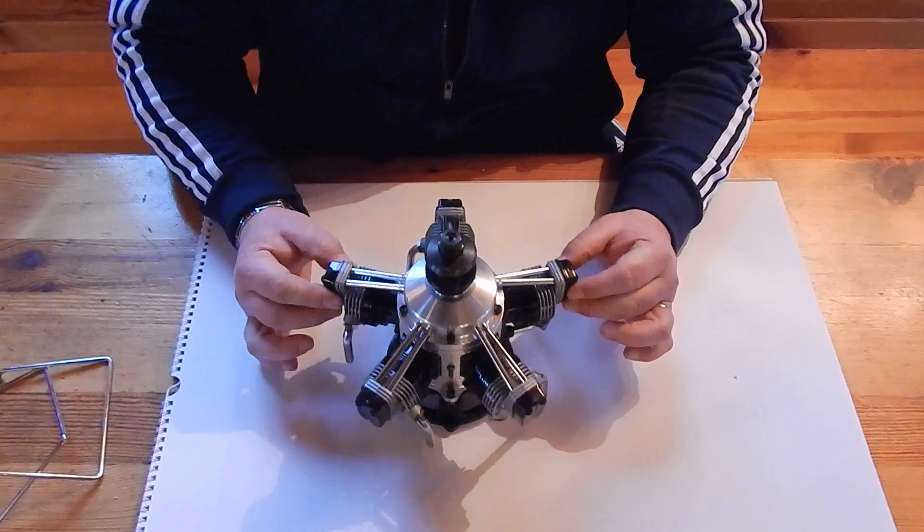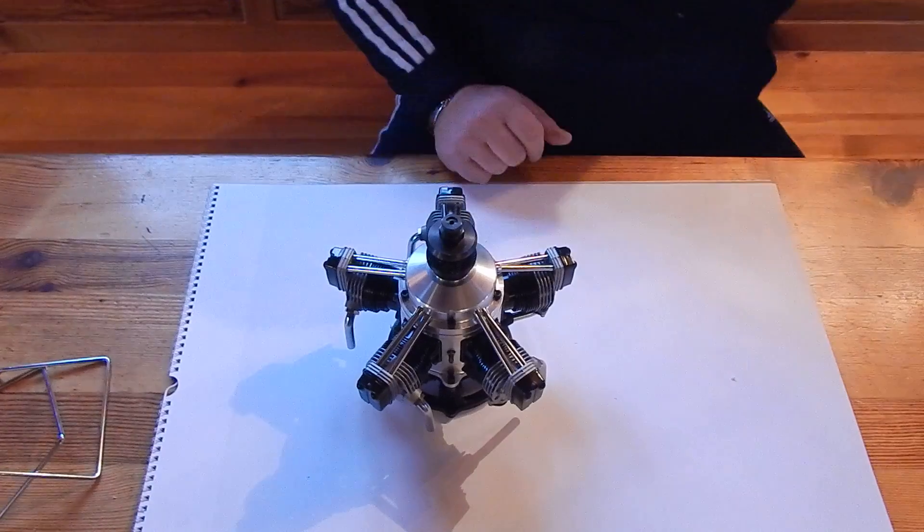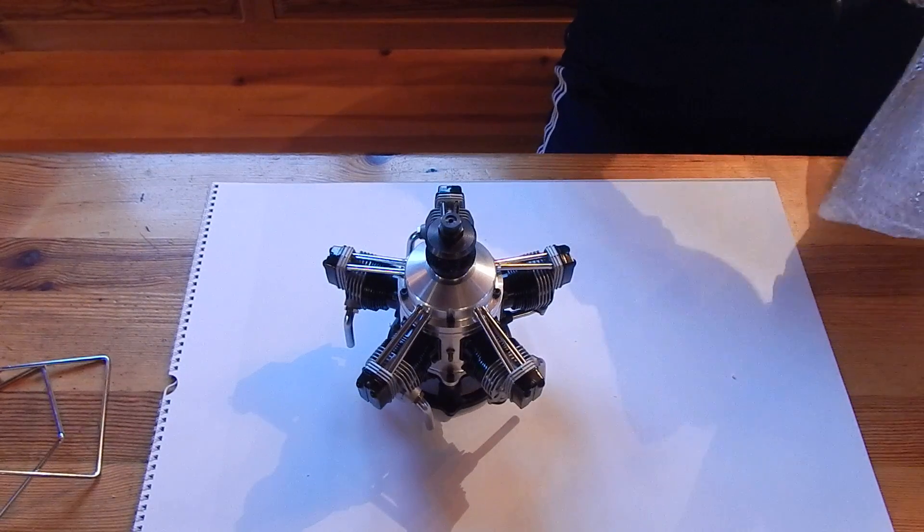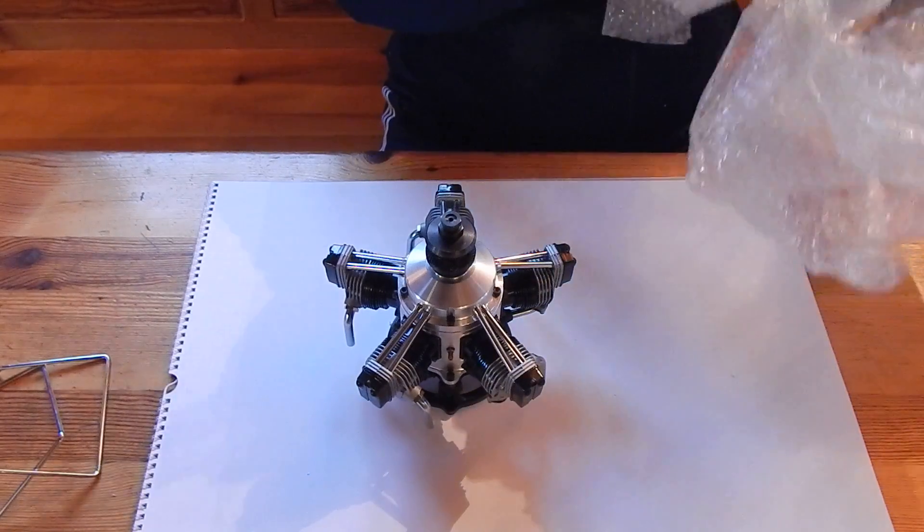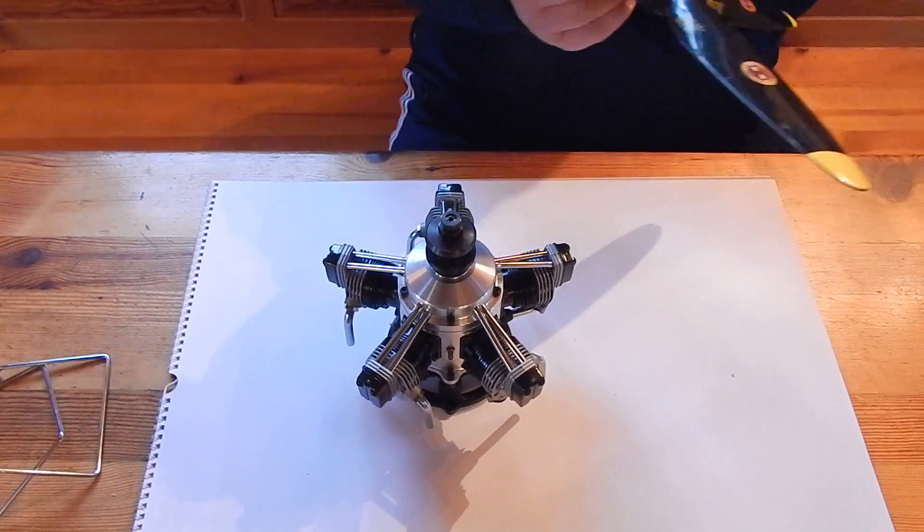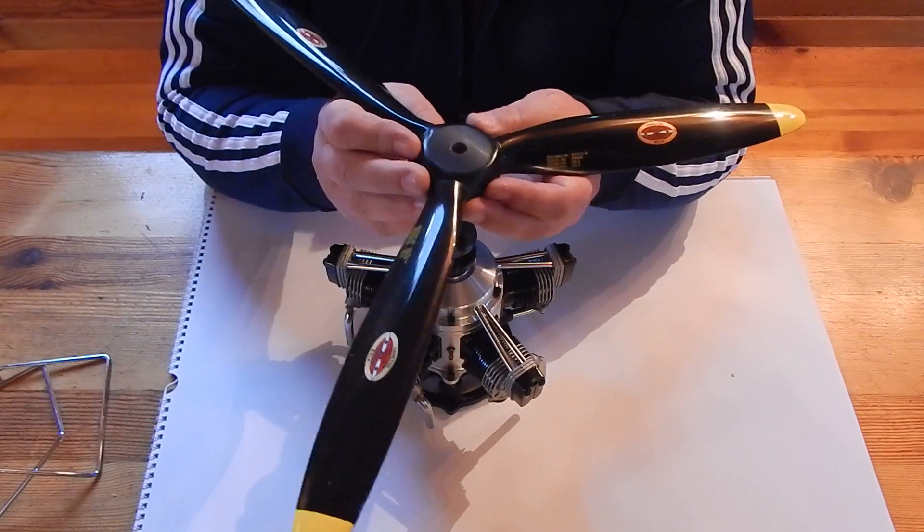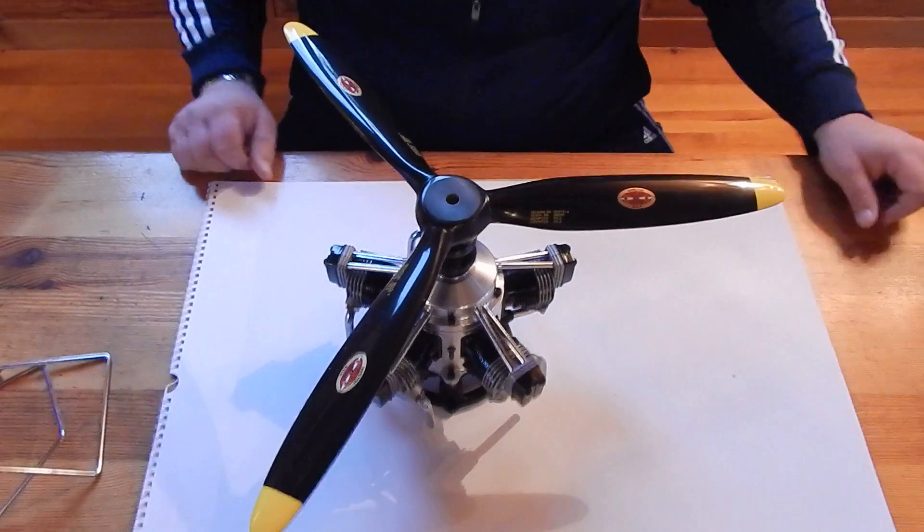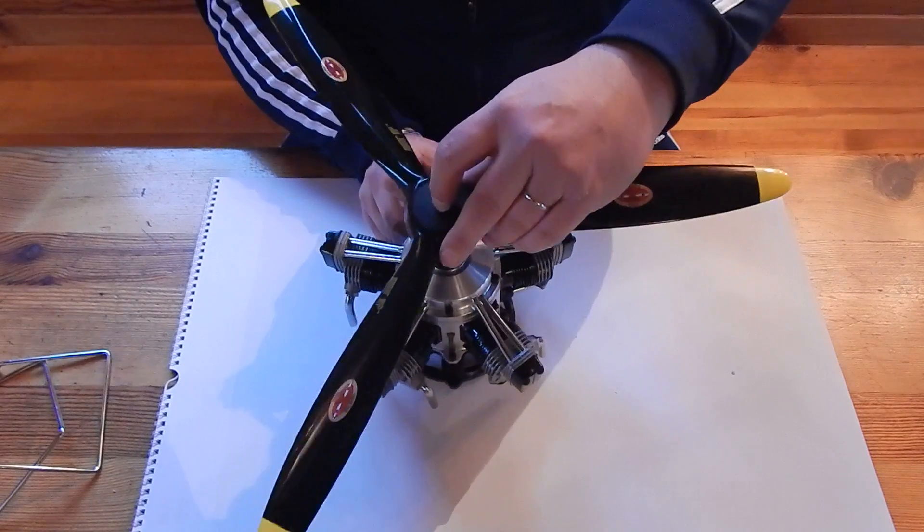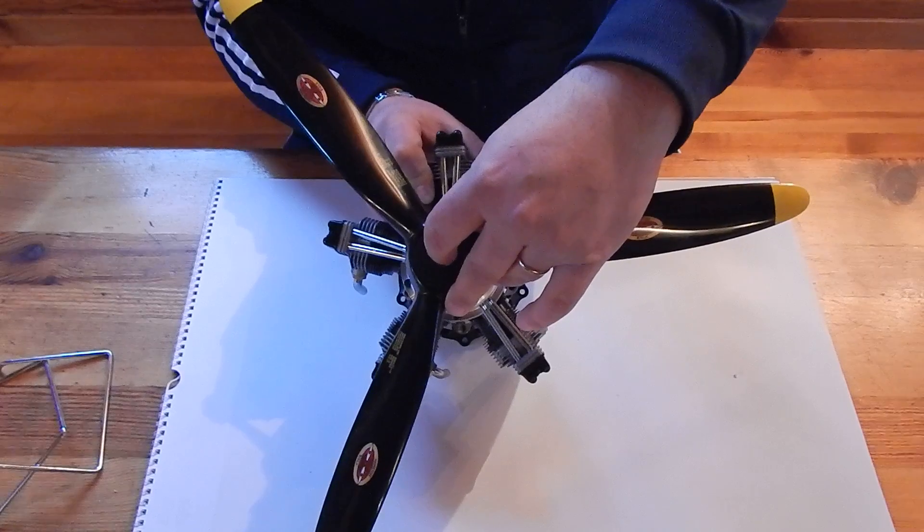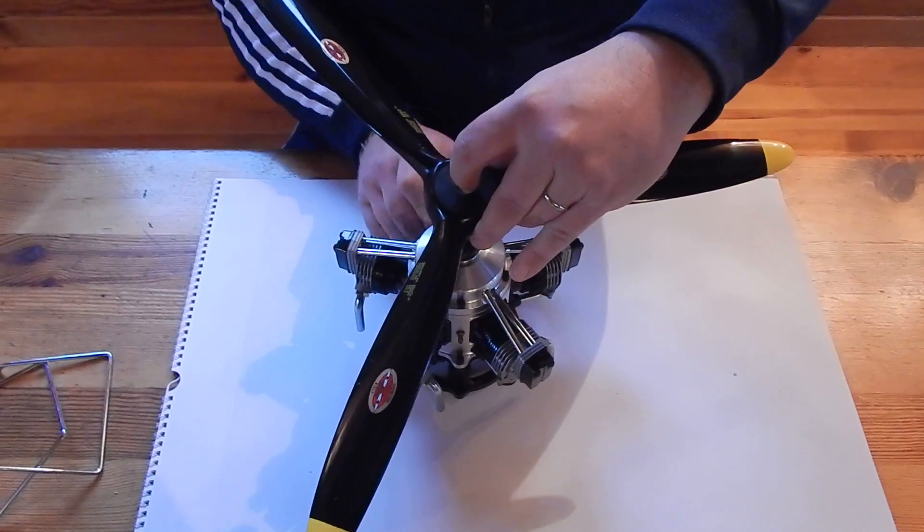Now I will show you the propeller that I will put on this engine. It's a three blade BL propeller. It will look very handsome on this engine. You can probably imagine what the joy will be to start this.